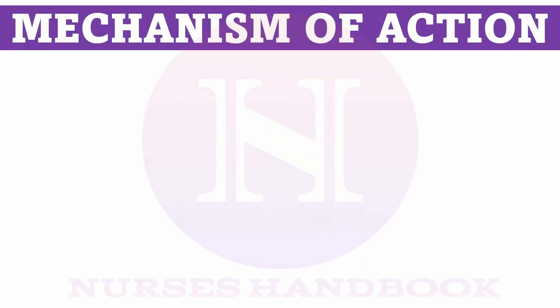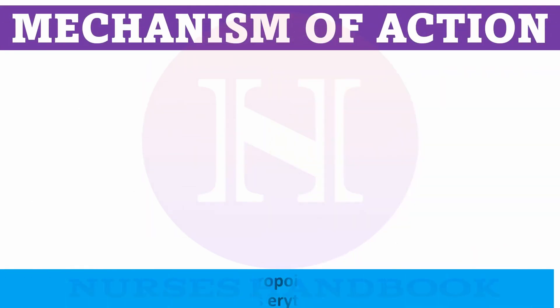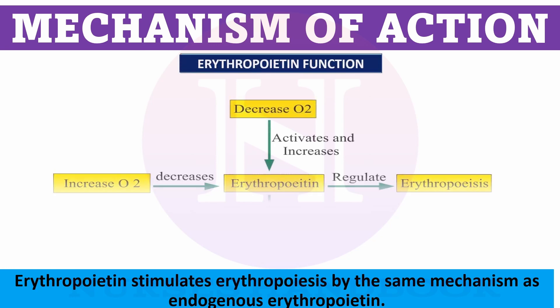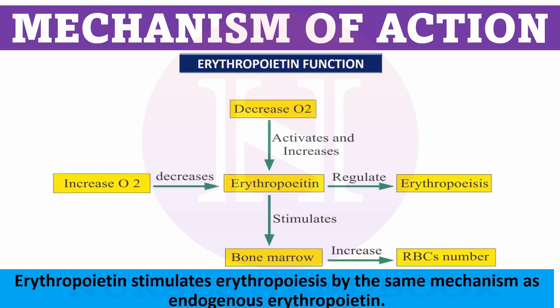Now let us see the mechanism of action. Injection erythropoietin stimulates erythropoiesis by the same mechanism as endogenous erythropoietin. Normally, when there is a lack of oxygen or decreased oxygen in the body, the kidneys get stimulated to produce erythropoietin, which in turn stimulates the bone marrow to produce more RBCs. In conditions where the body is not able to produce its own erythropoietin, injection erythropoietin is given.